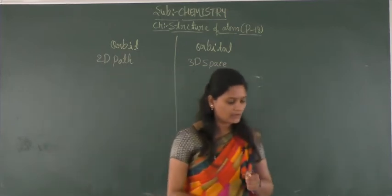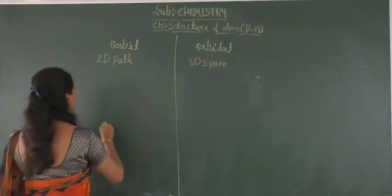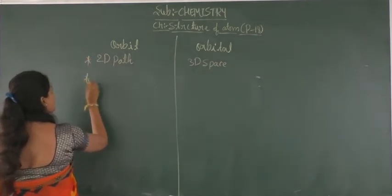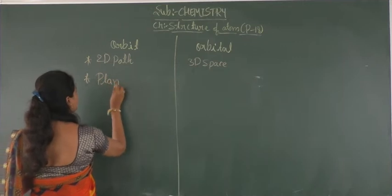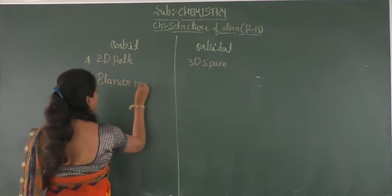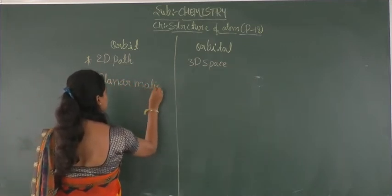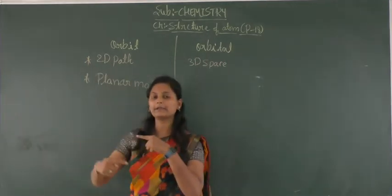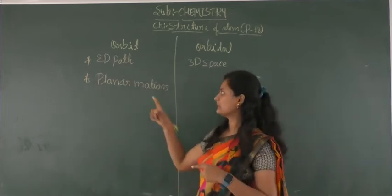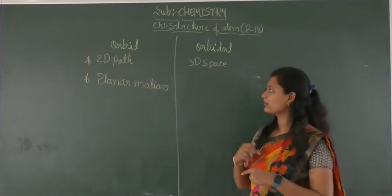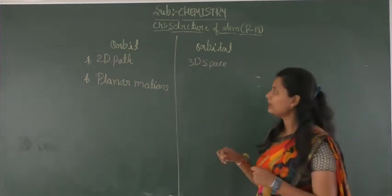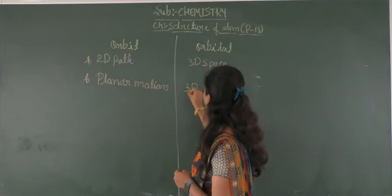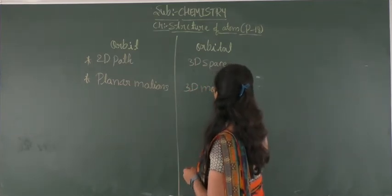The second difference is that in an orbit, the electrons are in planar motion. So, the electrons are revolving in the planar motion. When we consider the orbital, this is the three-dimensional motion.